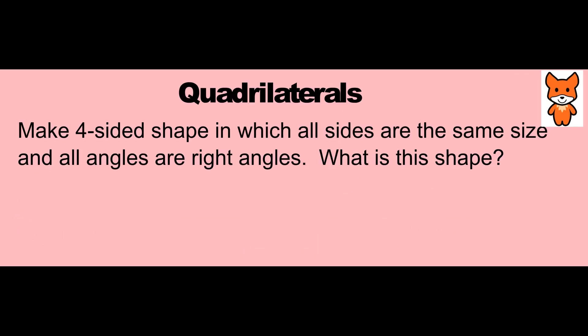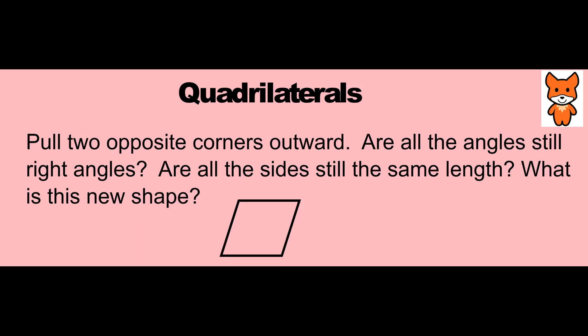Let's look at some quadrilaterals. If you make a four-sided shape in which all sides are the same size and all angles are right angles, what would that shape be? It would be a square. If we were to take a square and pull the two opposite corners outward, are all the angles still right angles? No. Are all the sides still the same length? Yes. What is this new shape? It is a rhombus.